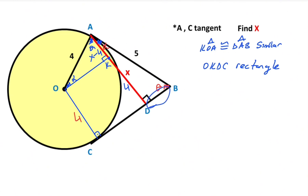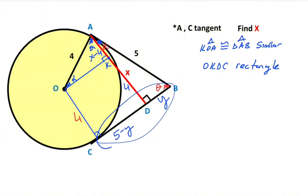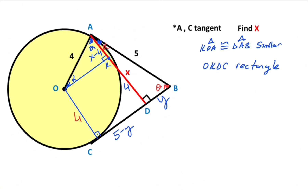I want to represent this length with y, so five minus y is left here. According to the two tangent theorem, these two lengths must be equal. Therefore, if this side is five minus y, that means this length is also five minus y.